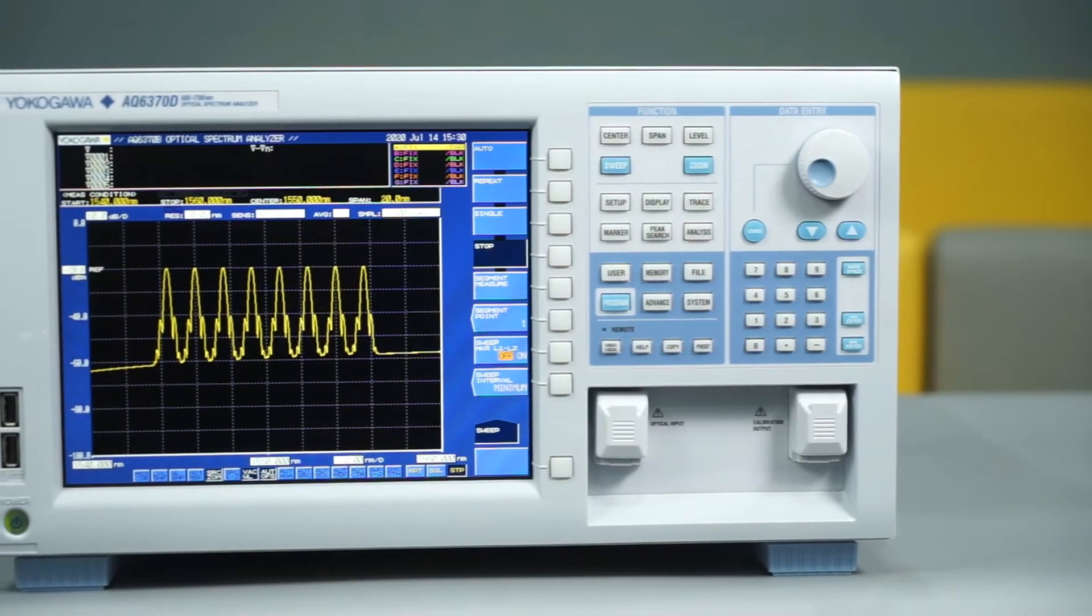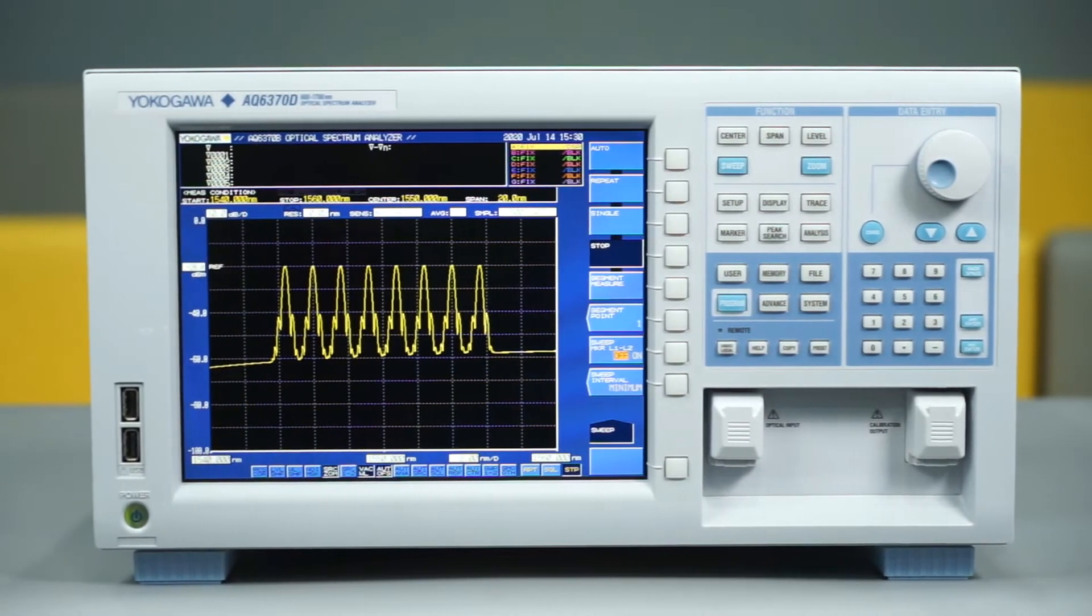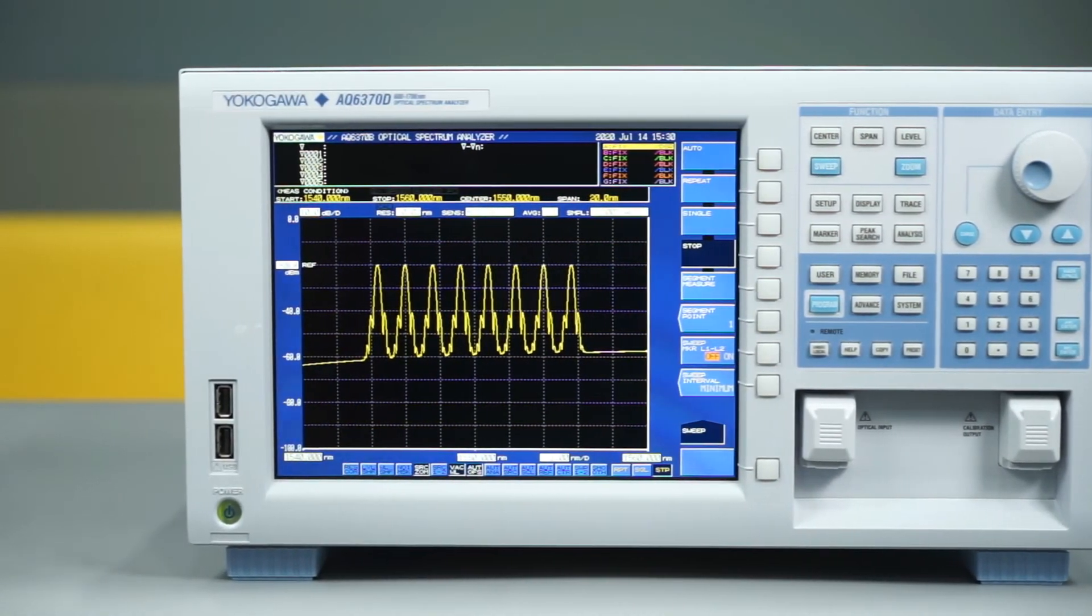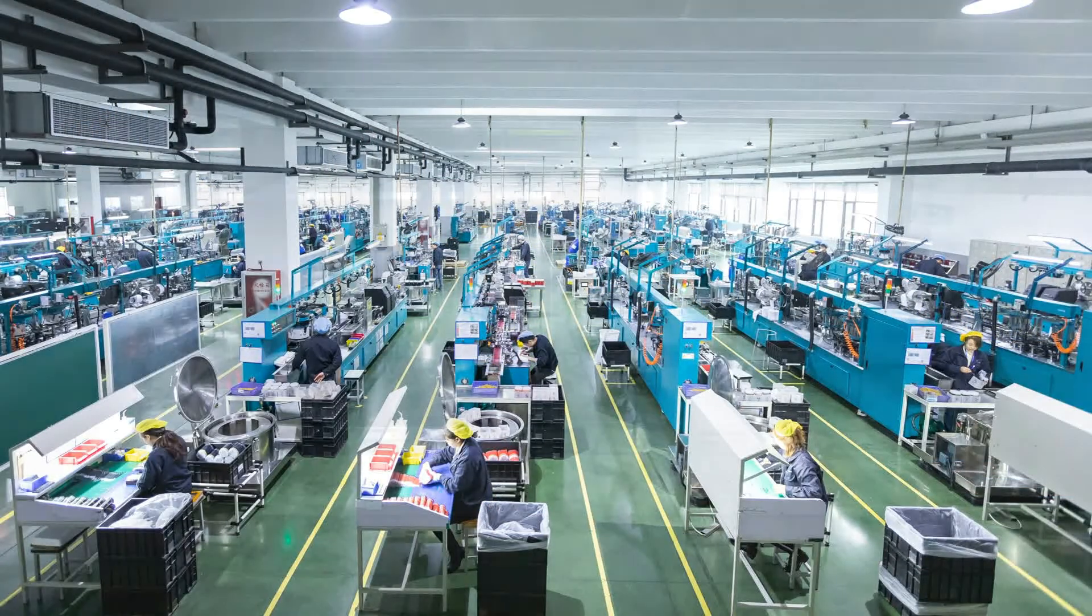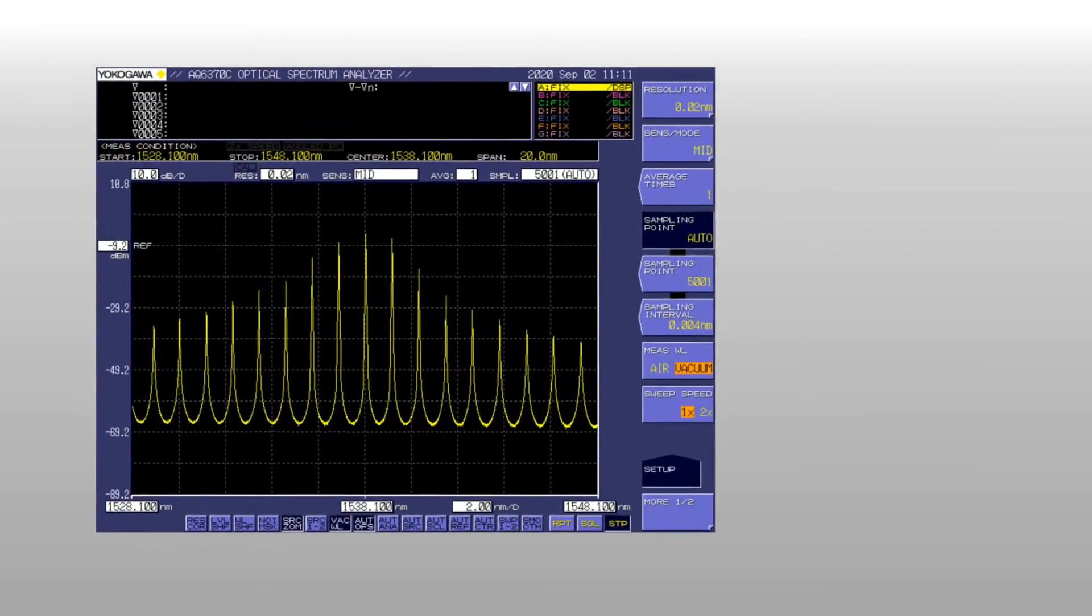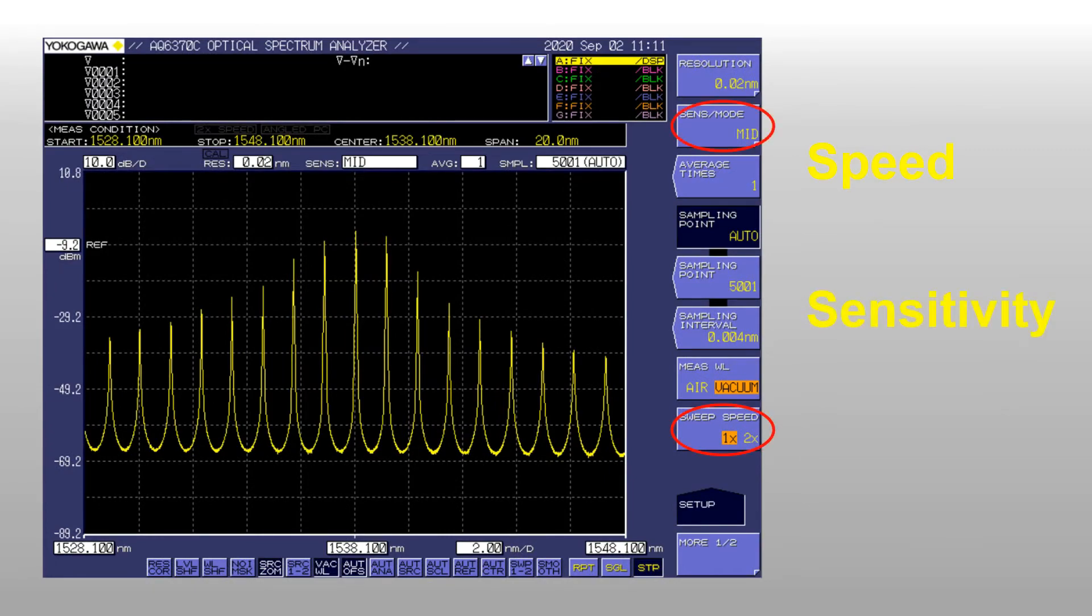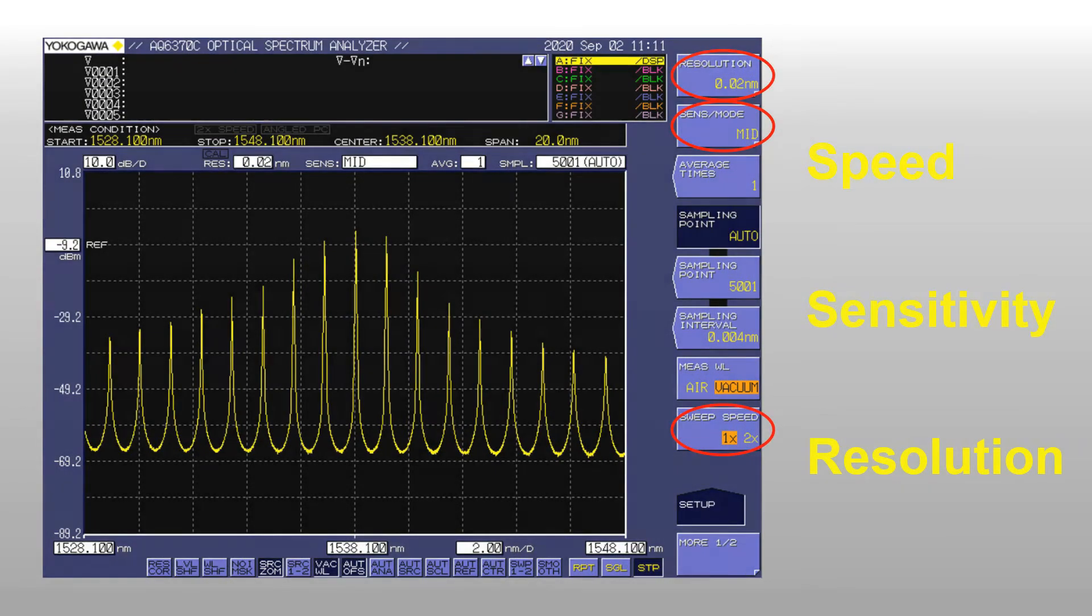Flexible parameter settings in the AQ6370 series enable the same instrument to be deployed both in the lab and on the production line. Users can alter the settings so that the analyzer is optimized for measurement speed, sensitivity or resolution.